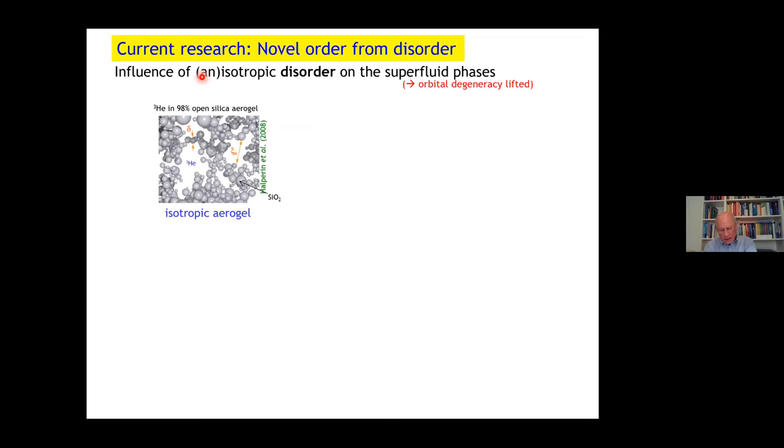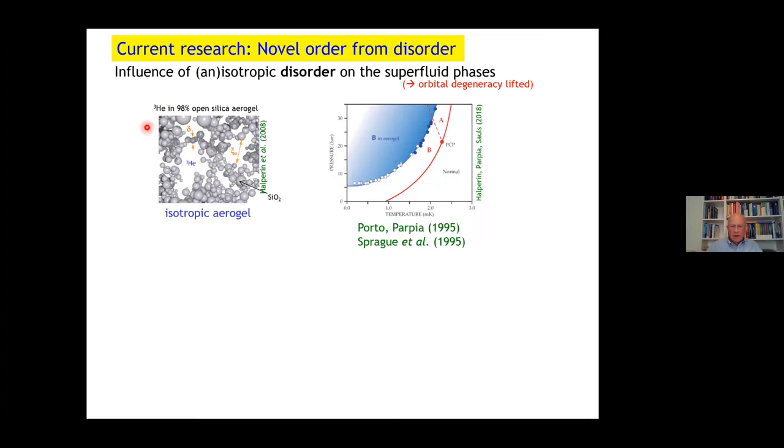I said that helium is a particularly pure system, perfectly pure. Now that can be boring at some time. So people say, let's see what happens if we introduce disorder. One can introduce helium-3 into what is called aerogel, that is a porous medium, highly porous. Here we see silica aerogel is isotropic. You can fill it in and then the Cooper pairs see this disorder. Already 25 years ago, it was found that due to the additional scattering has profound effects. The A phase is killed. The B phase is pushed to lower temperatures.